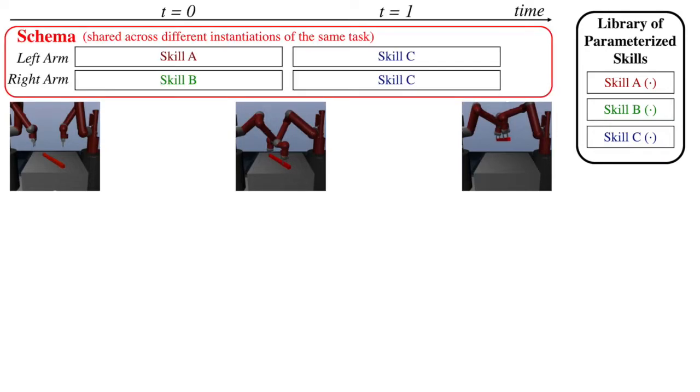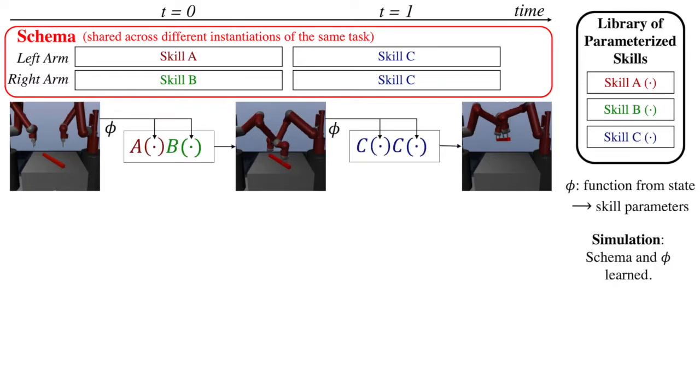Our insight is that for many tasks, the learning process can be decomposed into learning such a state-independent task schema, a sequence of skills to execute, as shown in red, and a policy to infer the parametrizations of these skills, given the current state, as denoted by phi.